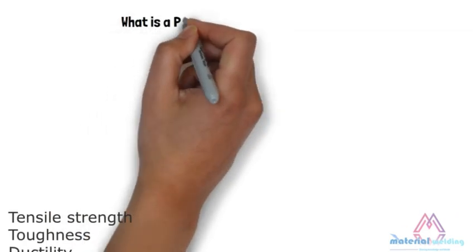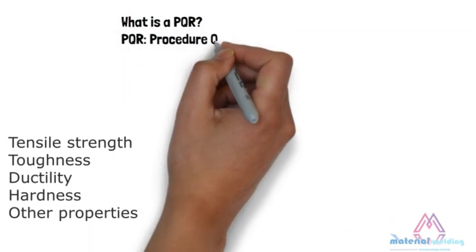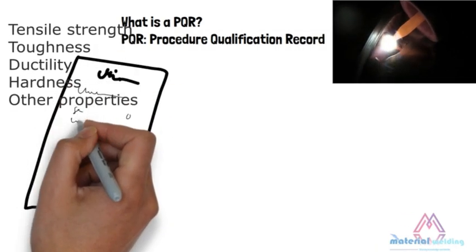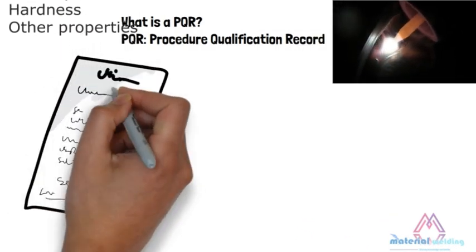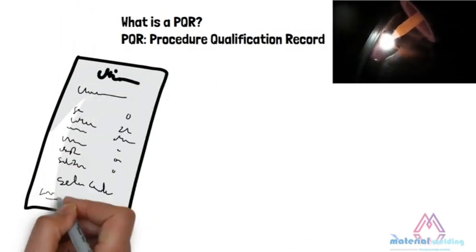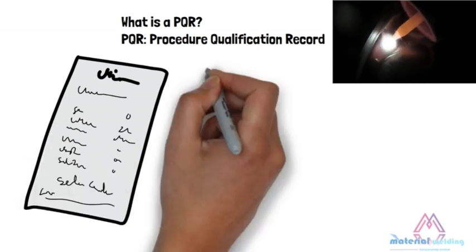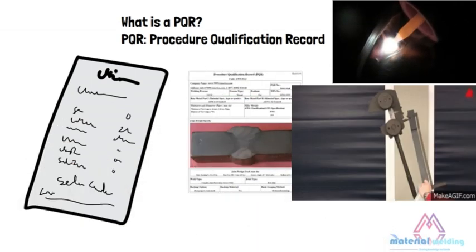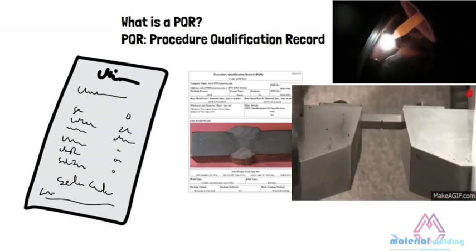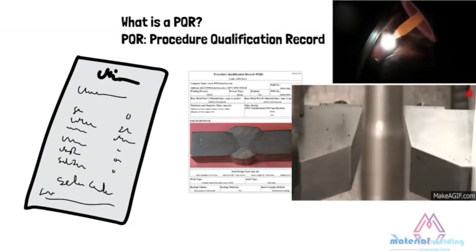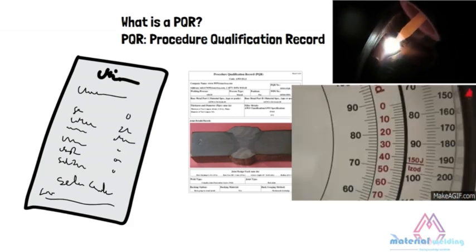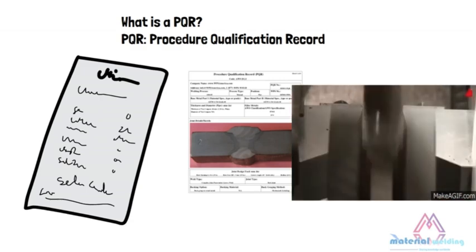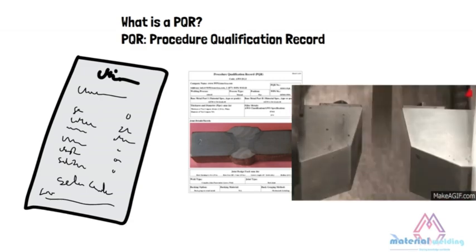The WPS must be validated to ensure that it meets the minimum specified requirements for mechanical properties and quality requirements. This is done by Procedure Qualification Record, or PQR. A PQR is the record of actual welding conditions that take place during the welding of the test coupon for WPS qualification. PQR also includes the results of mechanical tests and other tests to show the weld passed the minimum requirements.